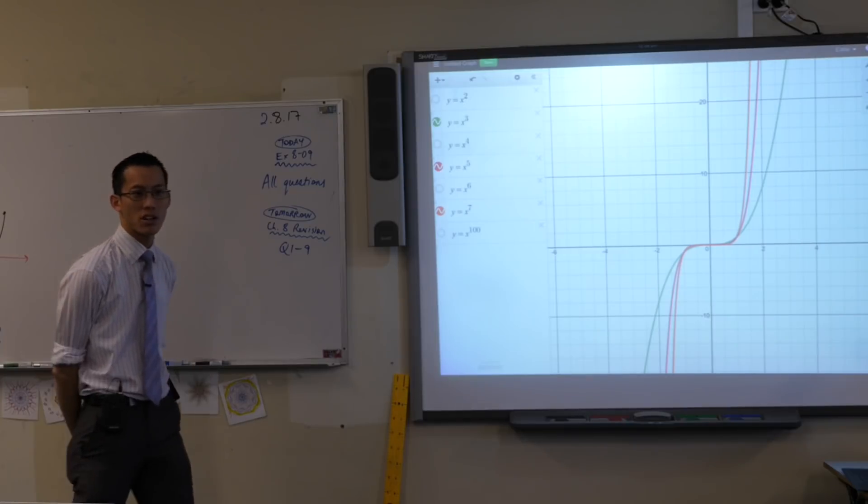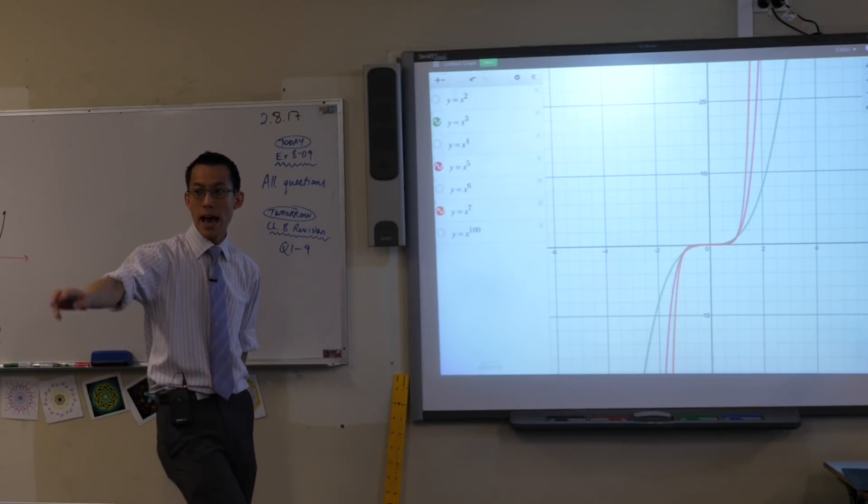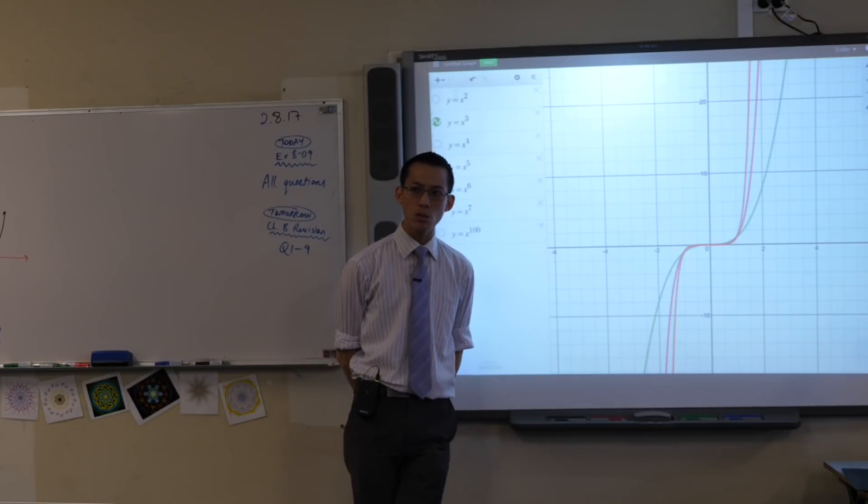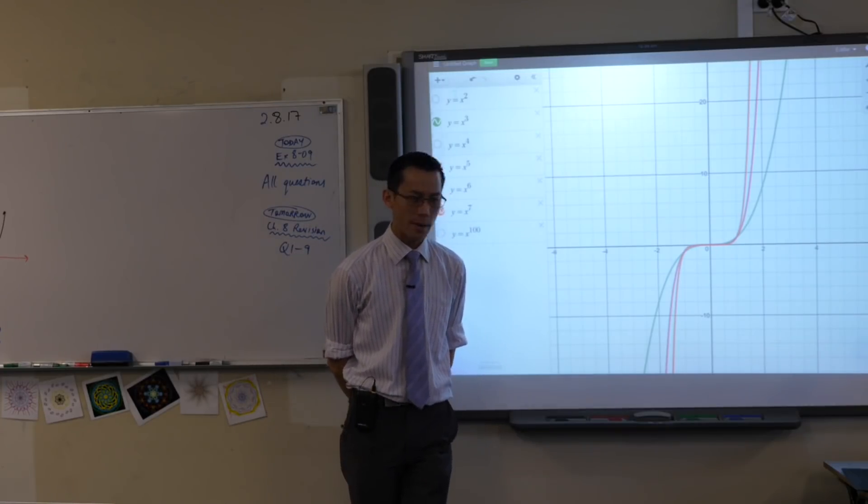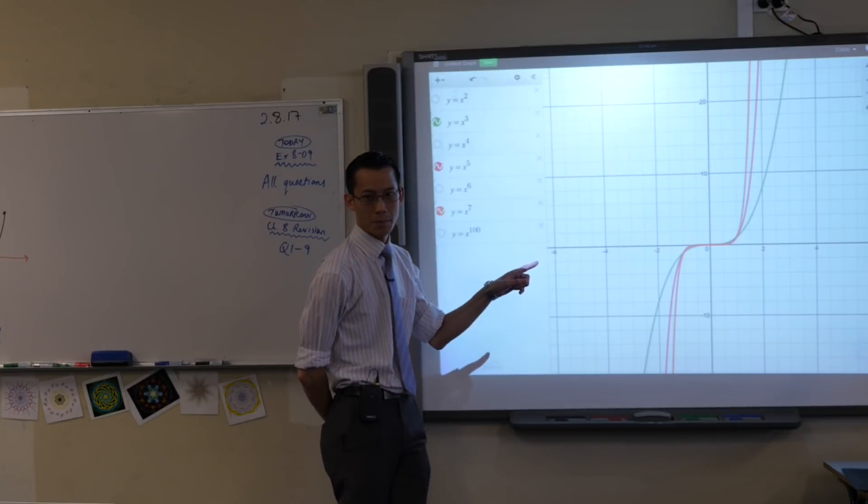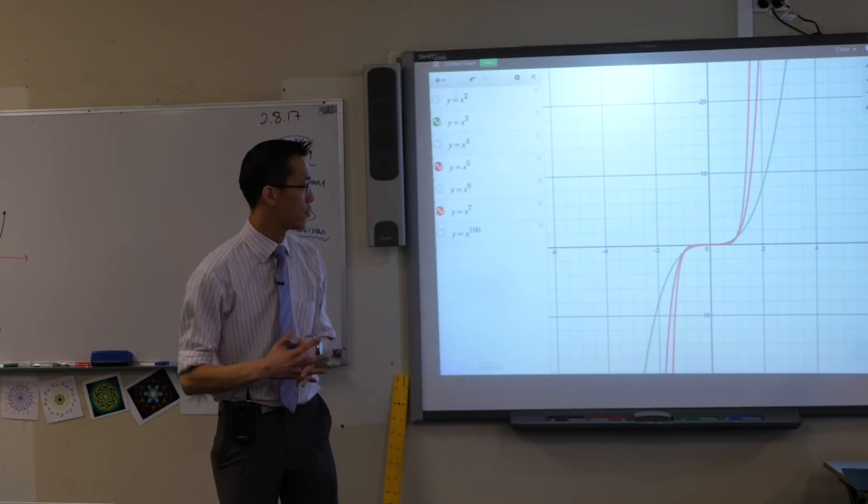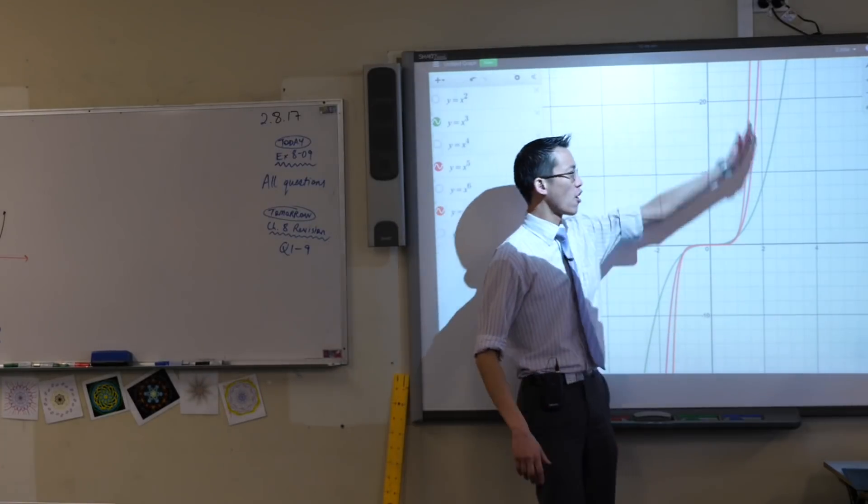As Jake was suggesting, they kind of all do look like the cubic graph. That's the green one. Except they're sort of like more extreme versions. Right? They're more extreme versions. So you can see how they go higher and higher.